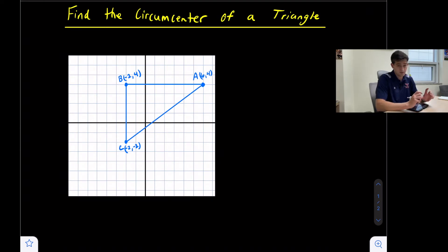The circumcenter is found by using the perpendicular bisectors of the triangle. A perpendicular bisector does two things: it's perpendicular to the side of the triangle and it bisects the side, which means it cuts through the midpoint of the side.